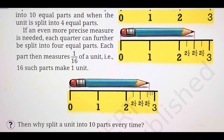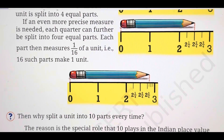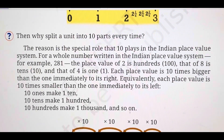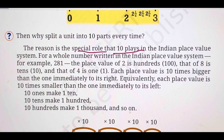It is possible to go on dividing into smaller and smaller parts. But why split a unit into 10 equal parts? The reason is that 10 plays a special role in the Indian place value system. If we see whole numbers and the Indian place value system — for a number like 281 — the place value of 2 is 100s, 8 is 10s, and 1 is 1s.